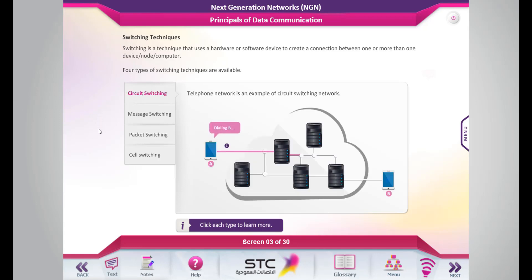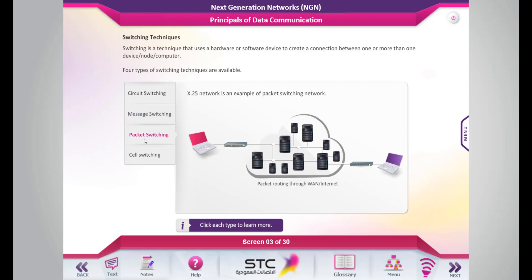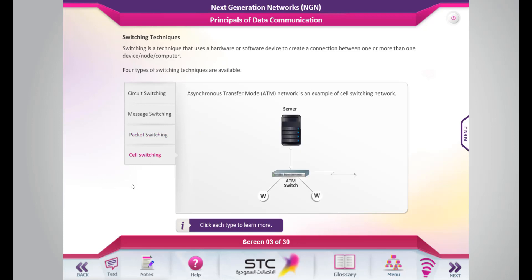Telephone network is an example of circuit switching network. Telex network is an example of message switching network. X.25 network is an example of packet switching network. Asynchronous Transfer Mode, or ATM network, is an example of cell switching network.